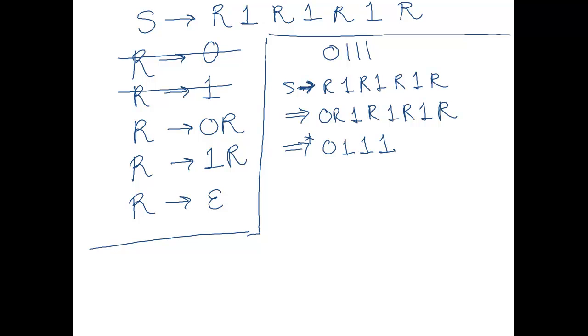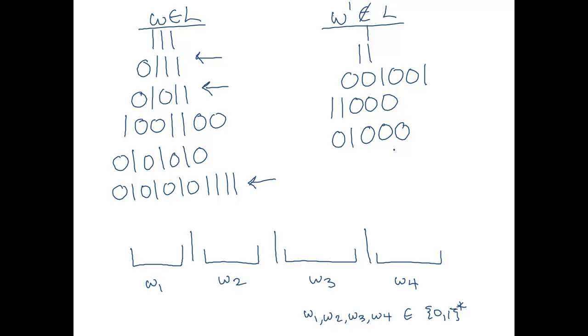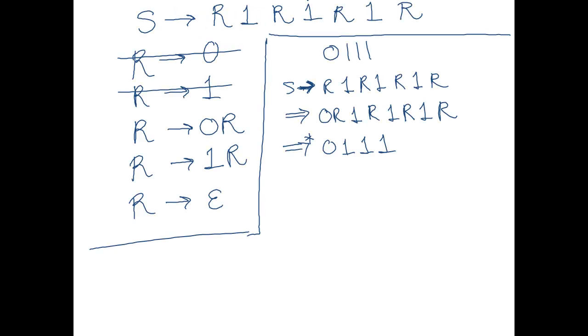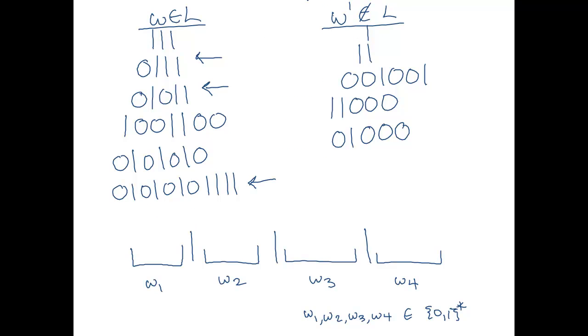Okay. So, see how the use of this last rule means that I don't have to worry about replacing an r with a 0 because I can use the rule r goes to 0, r, and then the rule r goes to epsilon to do that. Okay, so let's take another example string that should be in the language. Let's take 1, 0, 0, 1, 1, 0, 0. Okay, so we want to create this string 1, 0, 0, 1, 1, 0, 0. Is that what I had? Yeah. Let's do that one. Okay, so s yields r, 1, r, 1, r, 1, r.